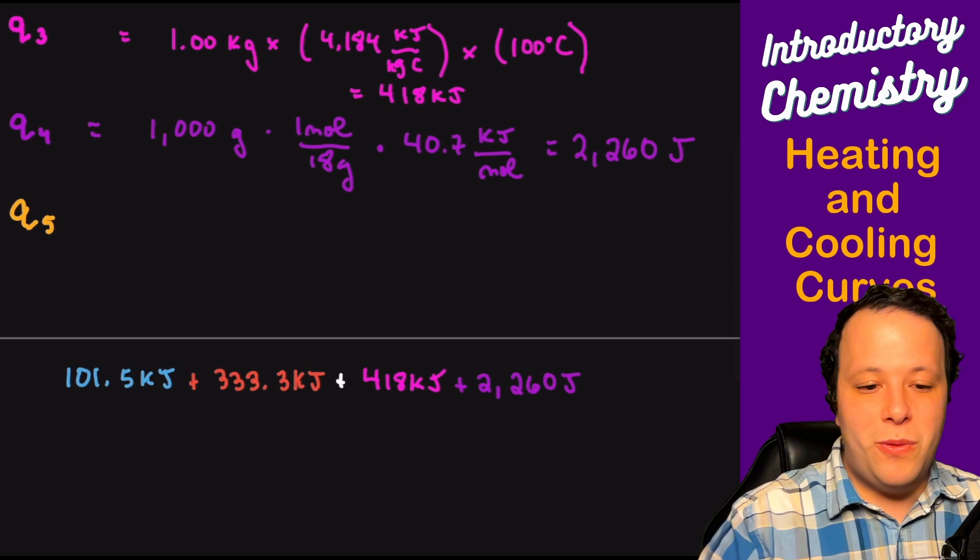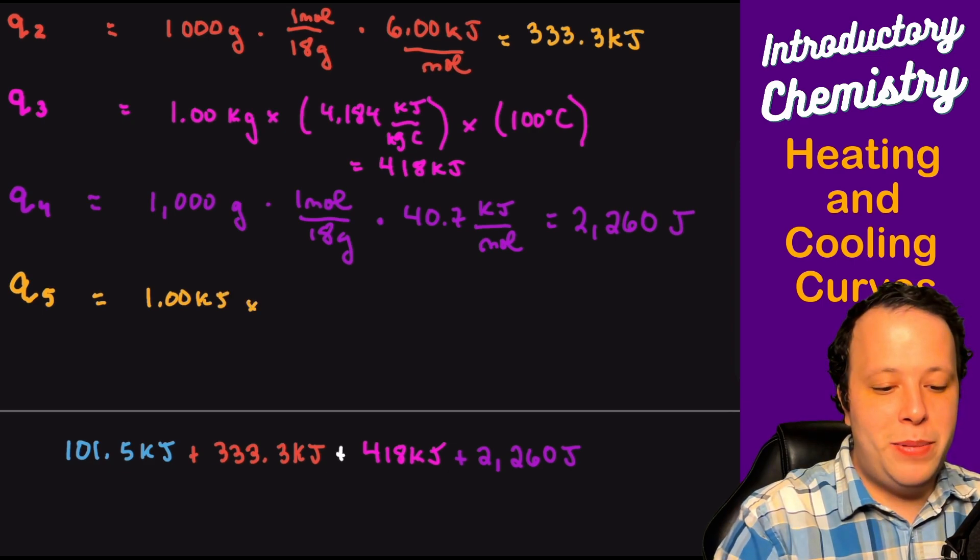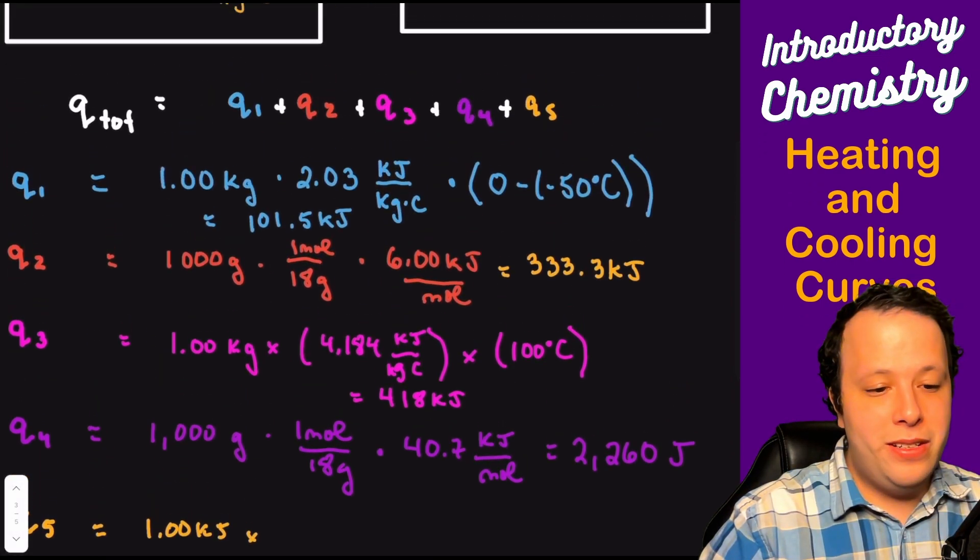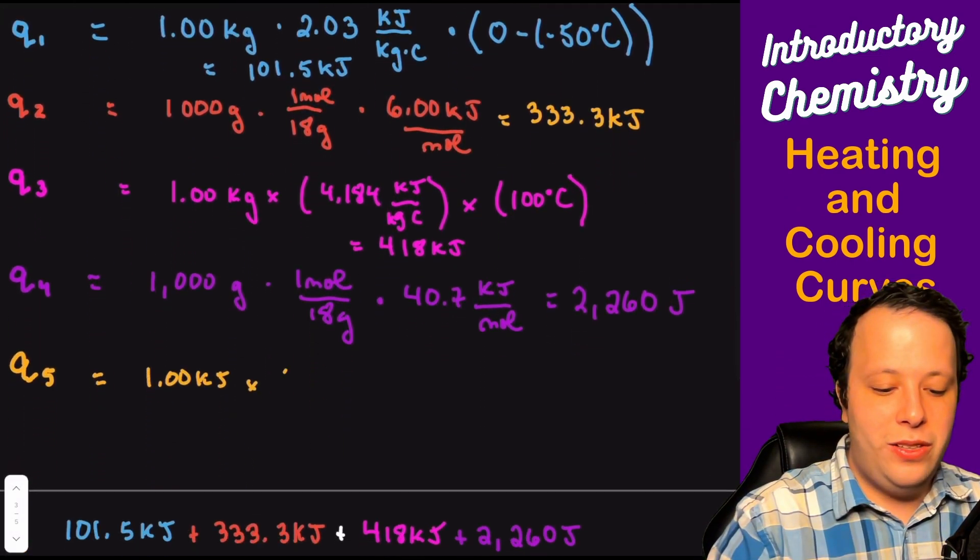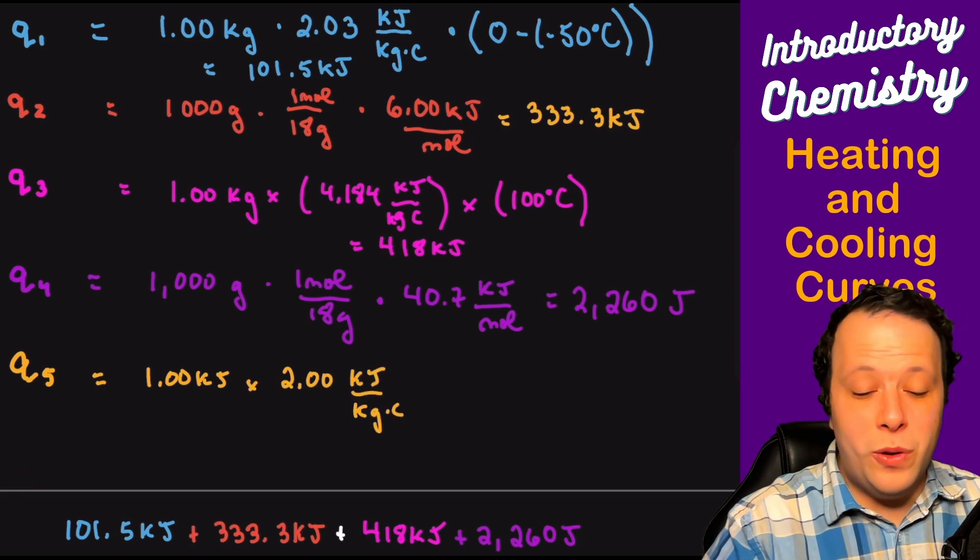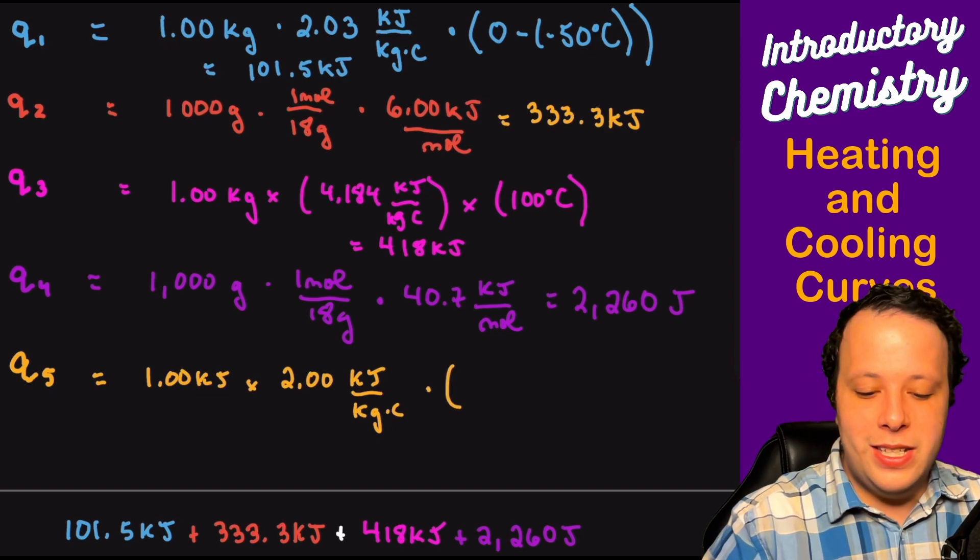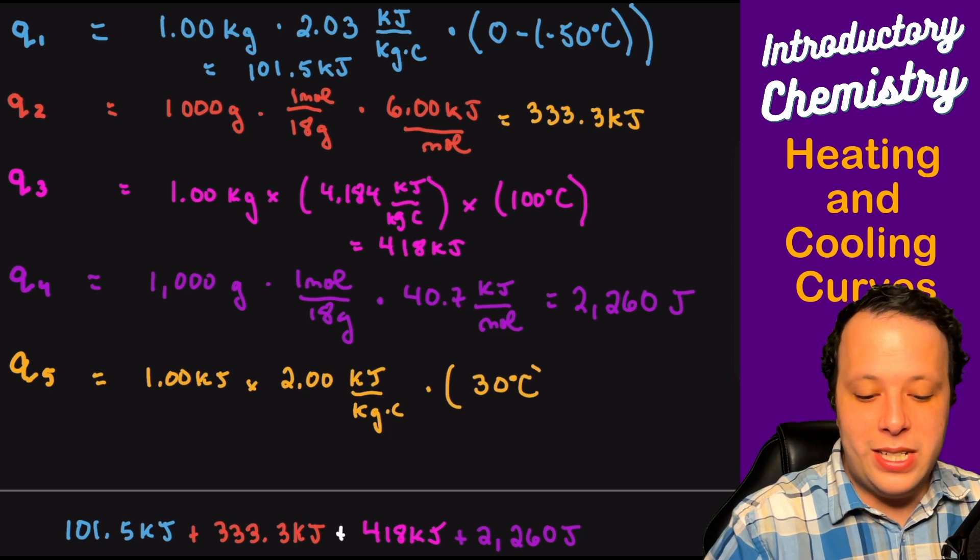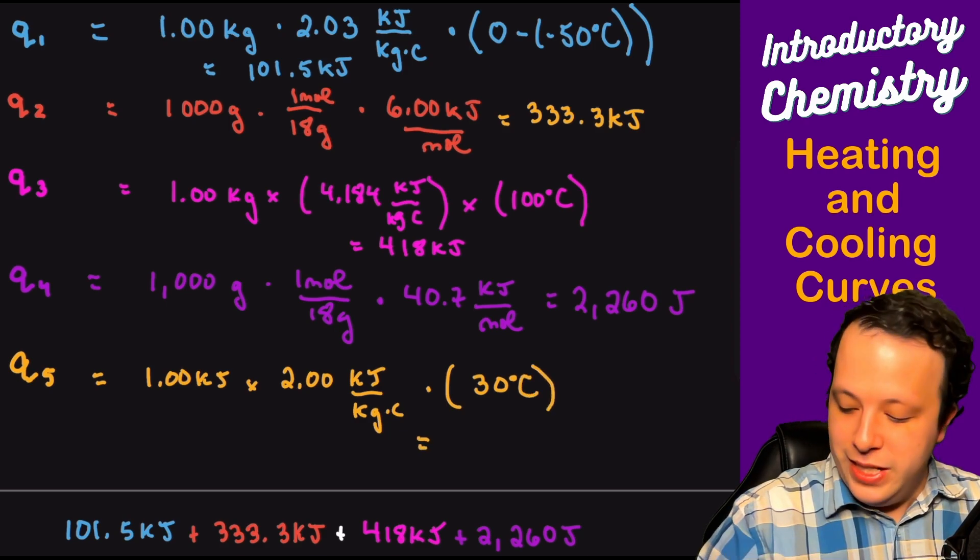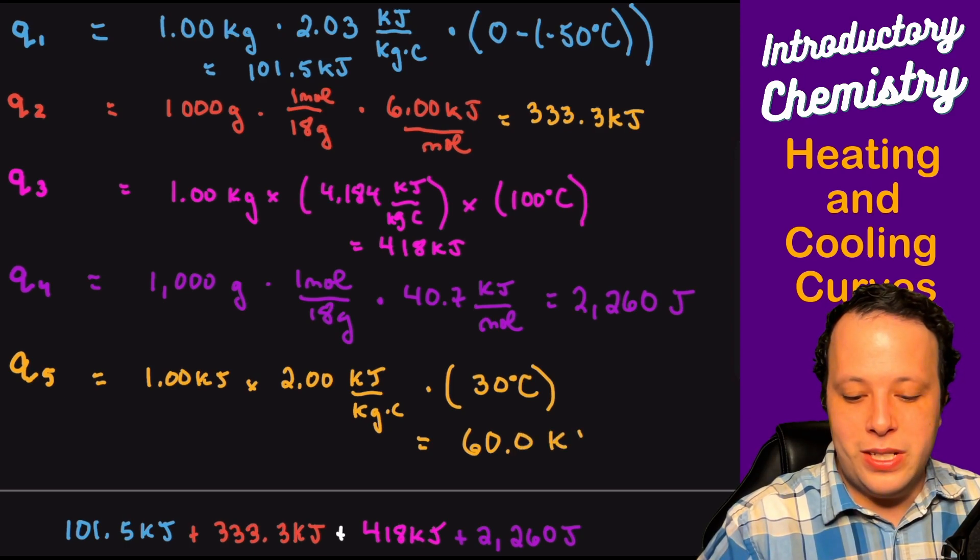And then for our last part, which is once again another slope, we're going to take that one kilojoule, times it by the specific heat of steam, just 2 kilojoules per kilogram per Celsius. And being that we're going from 100 to 130, this is going to be a difference of 30 degrees C, which is going to equal 60.0 kilojoules of energy.